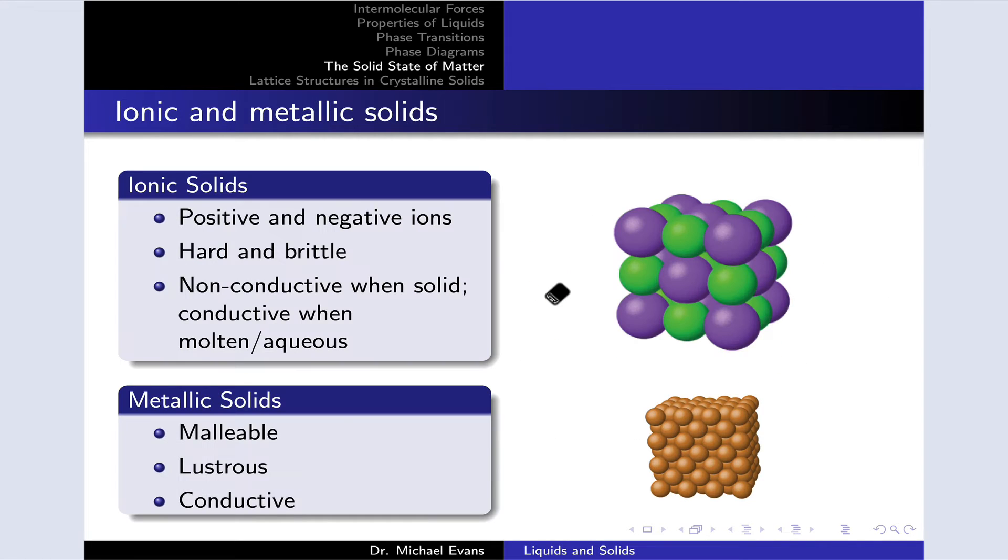We can classify solids a number of different ways, and we're going to now survey some of the most important classes of solids and how we think about them. So first we have the ionic solids, and these are sometimes simply called salts.